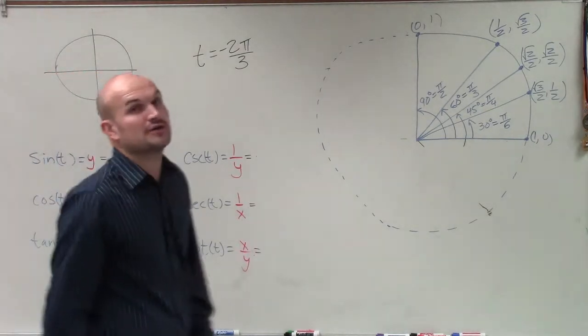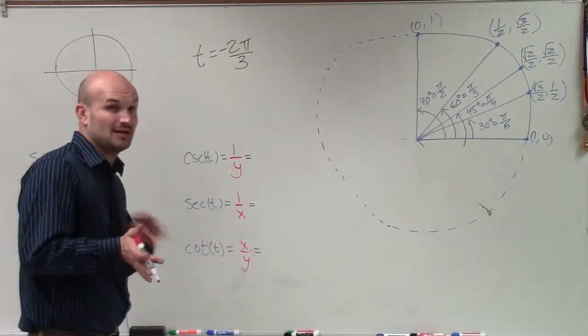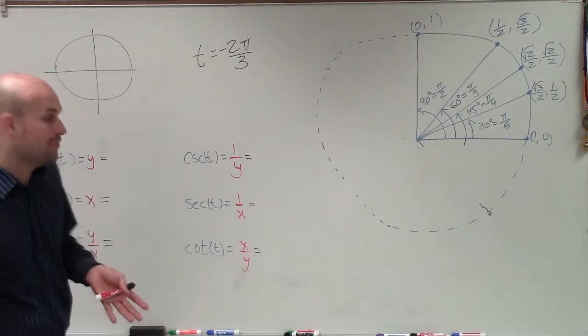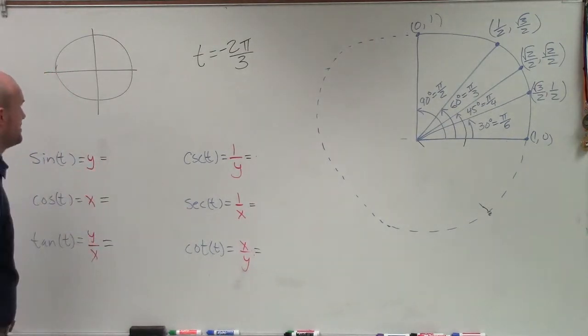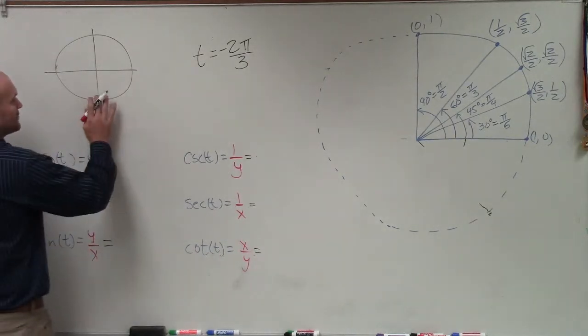So the first thing I want to do is evaluate which point is going to be on the unit circle. Because if I can find where the angle intersects the point on a unit circle, I can just use the x and y values of that point to help me evaluate my trigonometric function. So first of all, I need to be able to determine where is this angle negative 2π over 3.